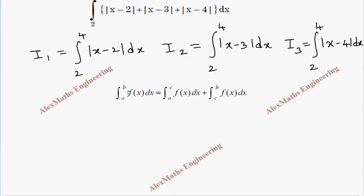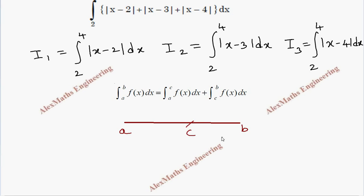To solve I1, I2, and I3 we are going to apply the property: integral from a to b of f(x) dx equals integral from a to c of f(x) dx plus integral from c to b of f(x) dx. That is, a limit from a to b can be split into two parts by taking some value c in between a and b.